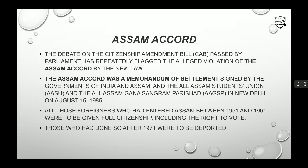The Assam Accord was debated in the context of the Citizenship Amendment Bill recently passed by Parliament, which allegedly violates the Assam Accord. The Assam Accord was a memorandum of settlement signed by the Government of India, the Assam government, the All Assam Students Union (AASU), and the All Assam Gana Sangram Parishad in New Delhi on August 15, 1985. The provisions of the Citizenship Amendment Bill and the Assam Accord were clashing with each other.